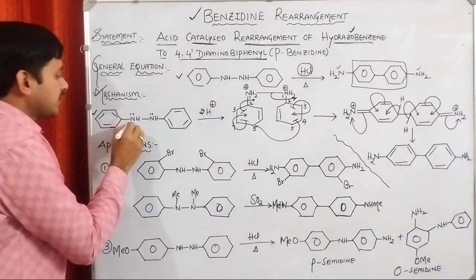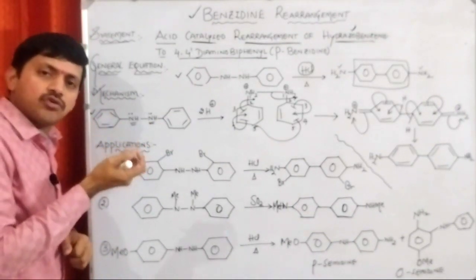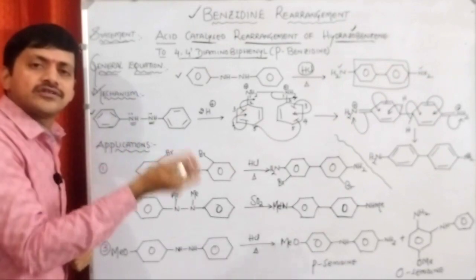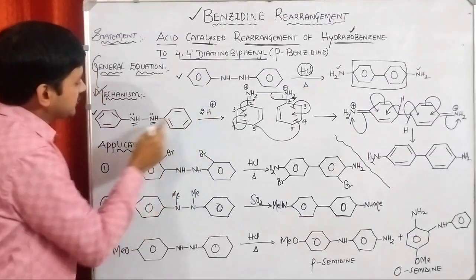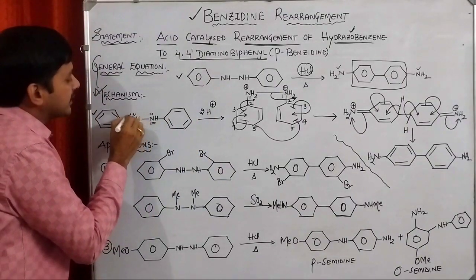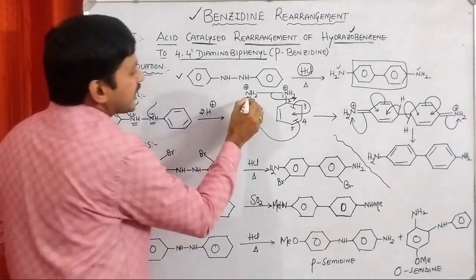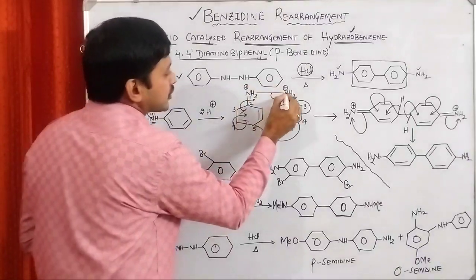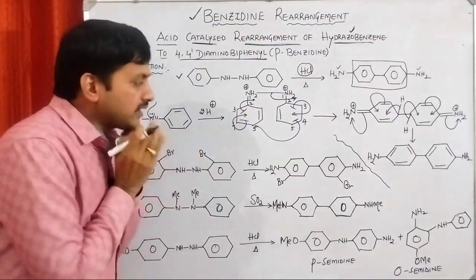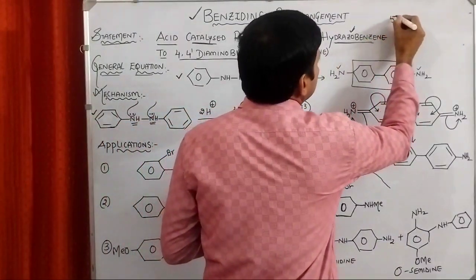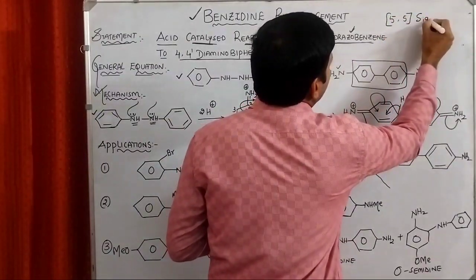Already, we know that in hydrazobenzene we are having two nitrogen atoms. Each nitrogen atom has a lone pair of electrons. They donate their lone pairs to the H⁺ ions present in solution — we are having two H⁺ ions. So, both nitrogen atoms donate their lone pairs to the two H⁺ ions. Thereby, what is happening? We are getting NH₂⁺ charges on both nitrogens. This particular step is very important — it is an example of a [5,5]-sigmatropic rearrangement.